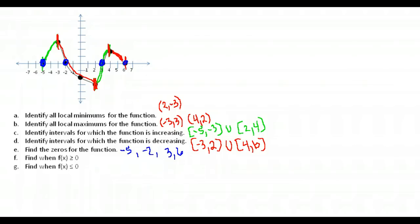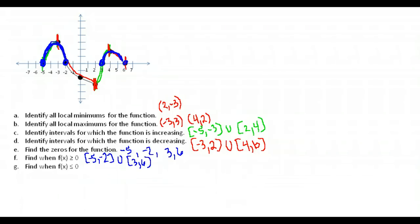When is f(x) greater than or equal to zero? That's any time the graph is above the x-axis where y is positive. This happens on the interval from negative five to negative two, and also from three to six. When is f(x) less than or equal to zero? That's any place below the x-axis, which occurs on the interval from negative two to positive three.